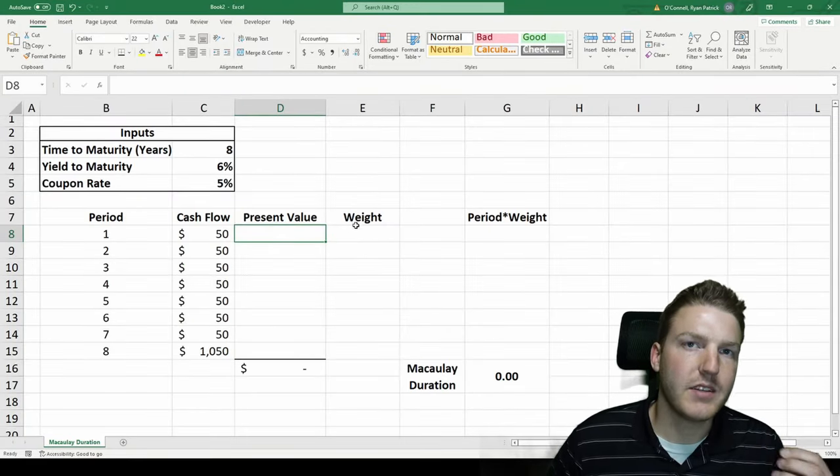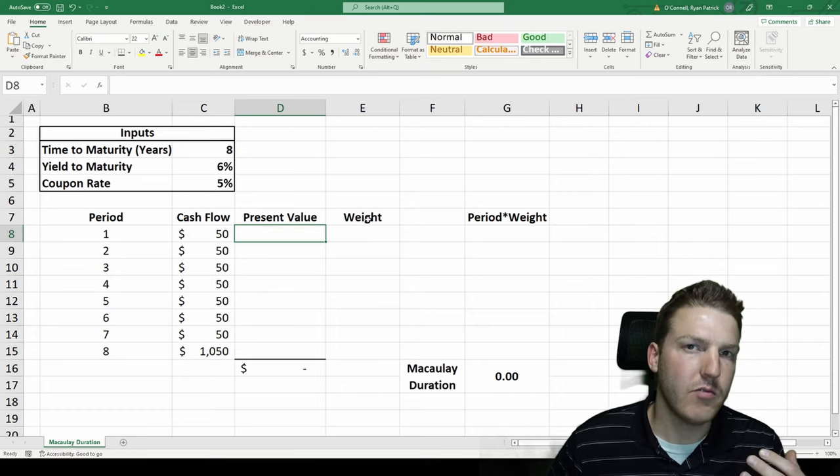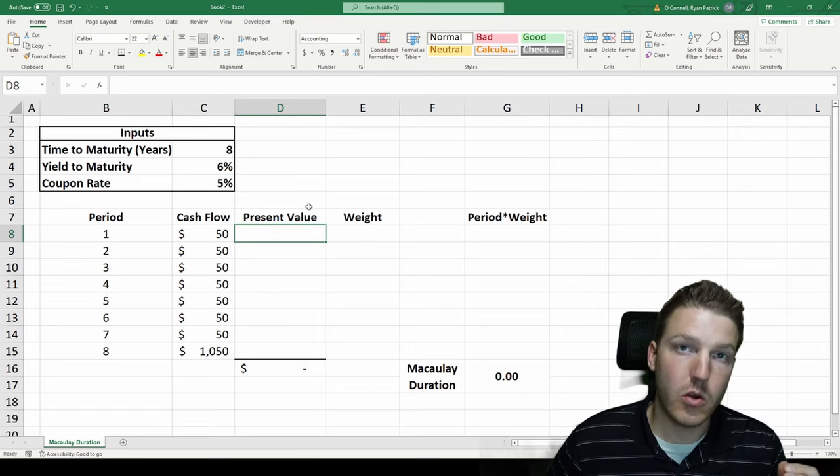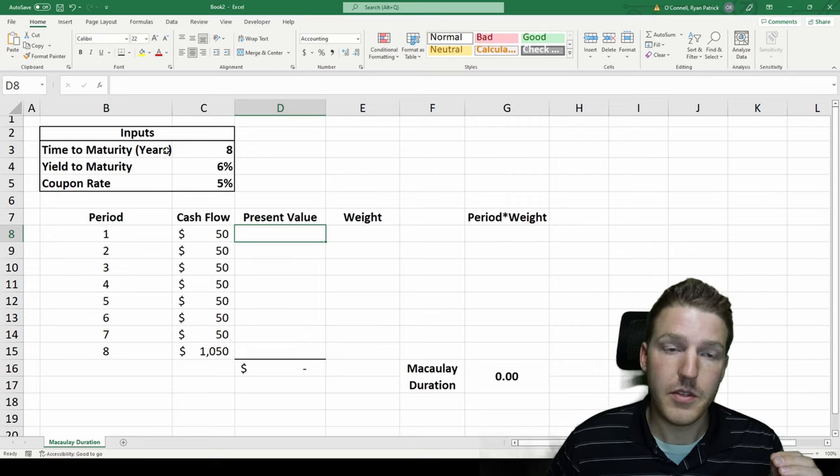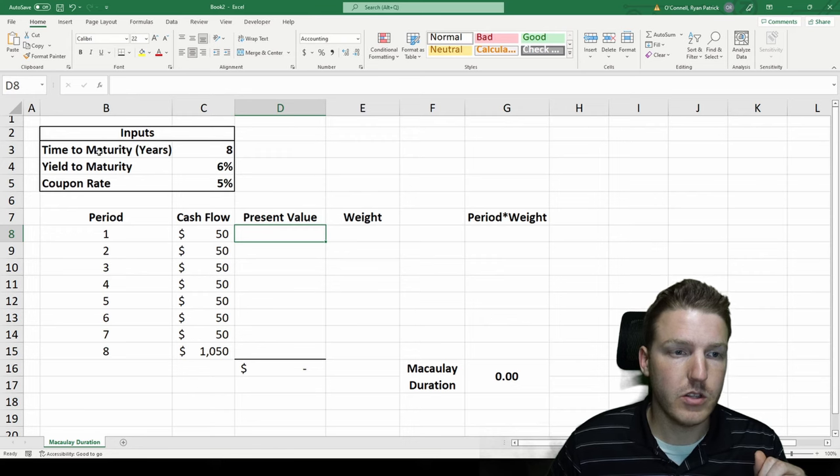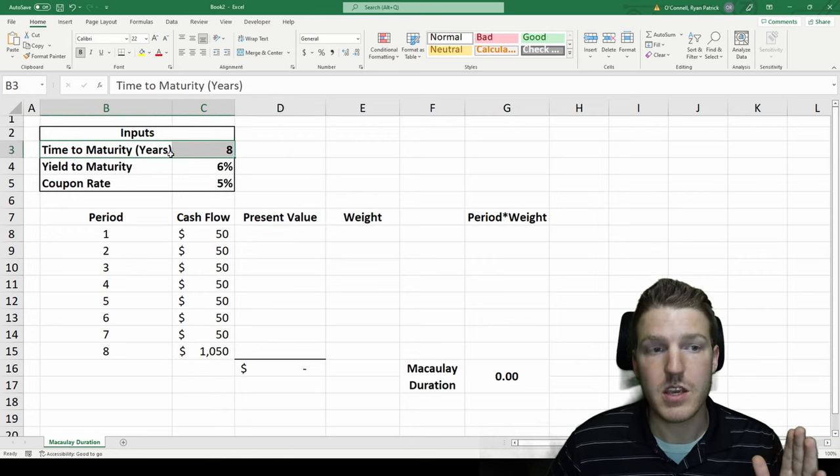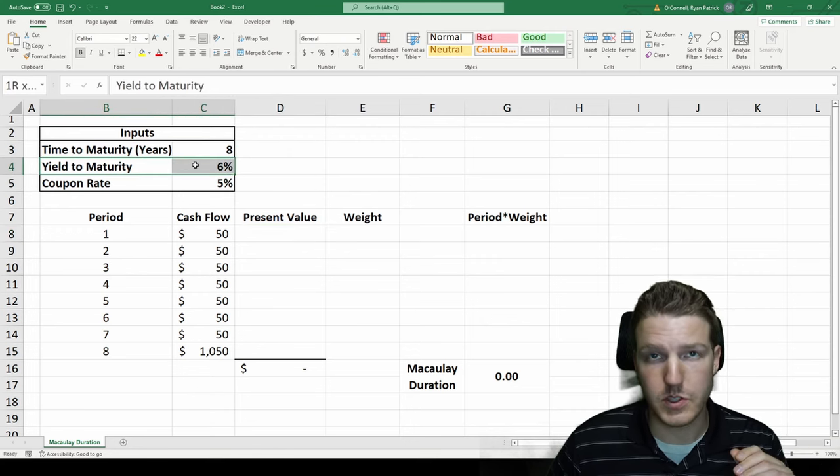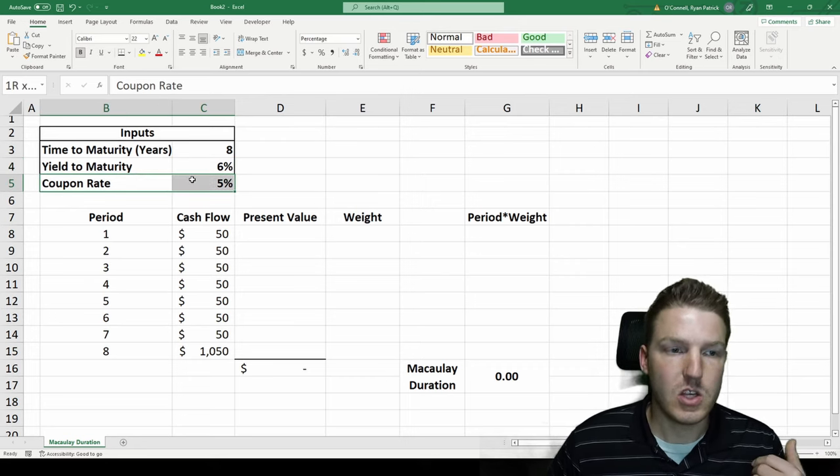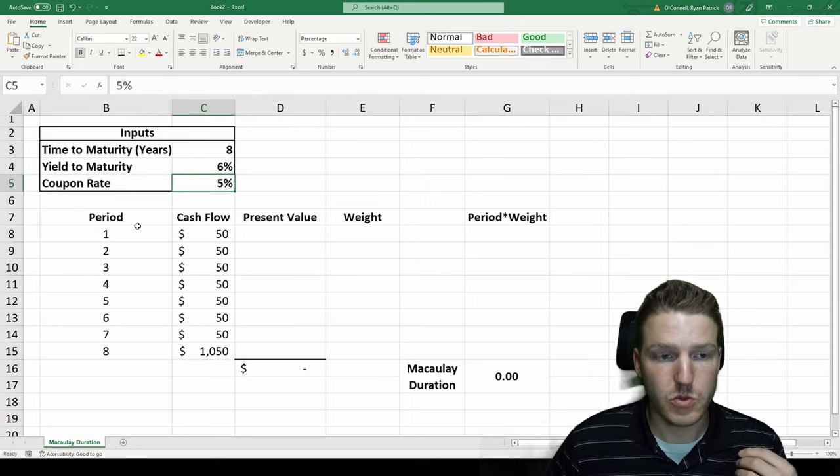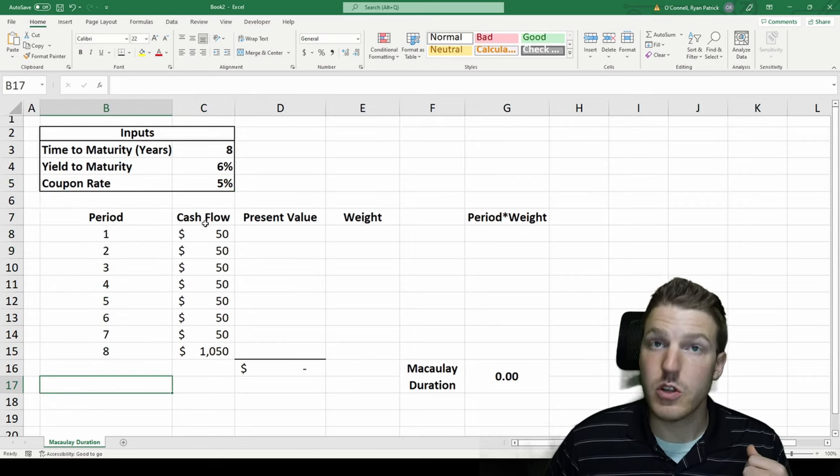Macaulay duration for a bond is calculated as the weighted average of the present values of the cash flows. In order to calculate this, we're going to use a fictional bond. This one in the example will have a time to maturity of eight years, a yield to maturity of 6%, so we'll say that's the market interest rate, and a coupon rate of 5%.